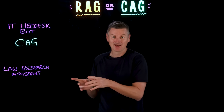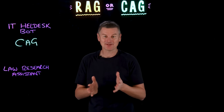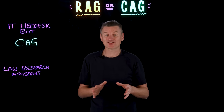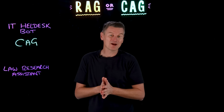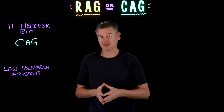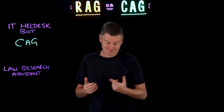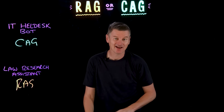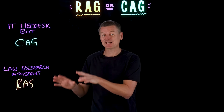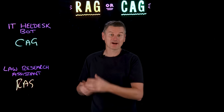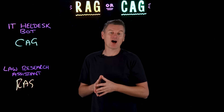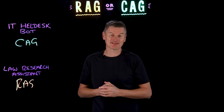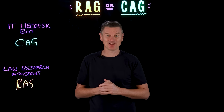Scenario two: you're building a research assistant for a law firm. The system needs to search through thousands of legal cases constantly being updated with new rulings and amendments, and lawyers need answers with accurate citations to relevant legal documents. RAG or CAG? RAG is the way to go here. The knowledge base is massive and dynamic with new content added all the time, so attempting to cache all this information would quickly exceed most models' context windows. The requirement for precise citations is also something RAG naturally supports through its retrieval mechanism, and the ability to incrementally update the vector database means the system always has access to the most current information.